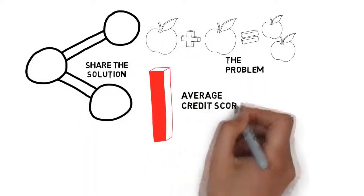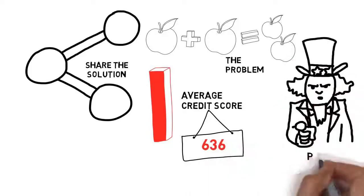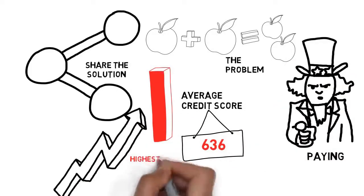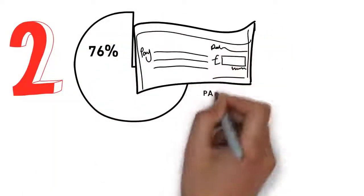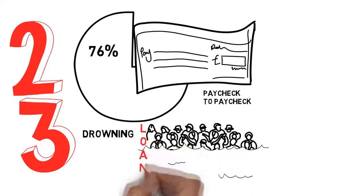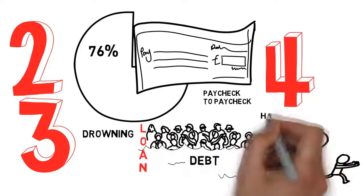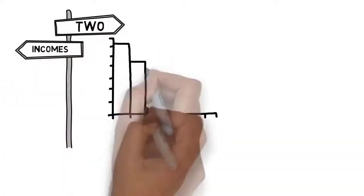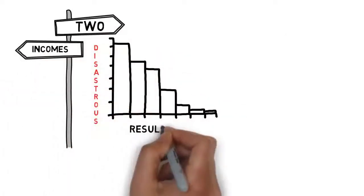Today, the average credit score in the United States is 636, which means that people are paying the highest interest rates for everything. 76% of Americans are living paycheck to paycheck. Students are drowning in student loan debt. Half of all marriages are ending in divorce, and by splitting the two incomes, the typical result is disastrous for credit scores.